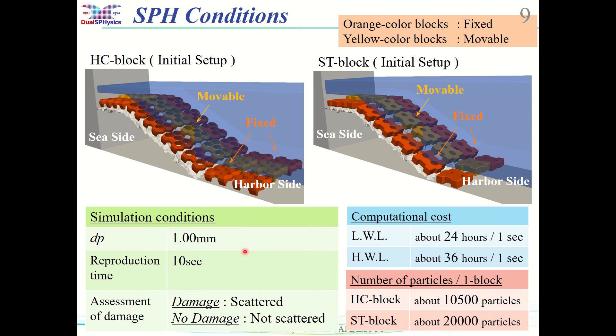The particle size is set to 1 mm. This is the largest particle size which no edges are lost when adjusting the shape of the block. The computational cost is shown in the bottom-right table, and the time required for simulation is about 2 weeks for the reproduction period of 10 seconds. If one or more blocks turn over, it is defined as damage, and if no blocks turn over within 10 seconds, it is defined as no damage.